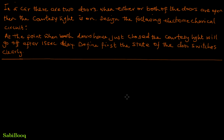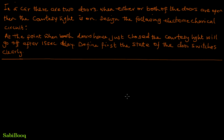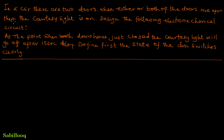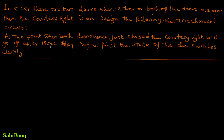Hello and welcome to Sabi Book. Today we are going to answer a question I find quite interesting because it's related to automobiles — applications we come across in our everyday activity. In a car there are two doors; when either or both of the doors are open, the courtesy light is on. Design an electromechanical circuit where, at the point when both doors have just closed, the courtesy light will go off after a 15-second delay. Define first the state of the door switches clearly.